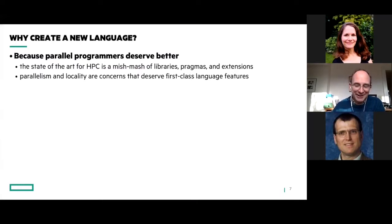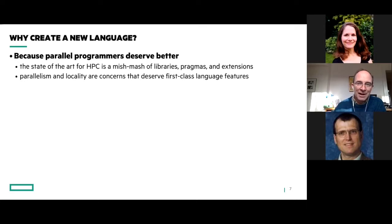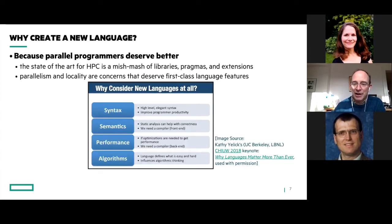A lot of times when we talk about Chapel, particularly in the HPC community, you get this withering reaction like 'why are you creating a new language?' People just have really negative impressions about attempts to create new languages. My answer is that parallel programmers deserve better, particularly at HPC scales. The state of the art for HPC programming, if you think about it honestly, is essentially a mishmash of libraries, pragmas, and extensions mixed in with languages that were really designed for serial programming to begin with. Parallelism and locality deserve first-class language features, and yet in most languages they're tacked on through various extensions.